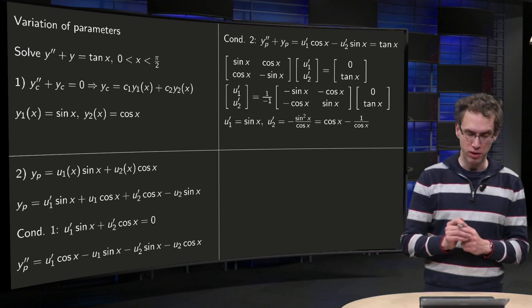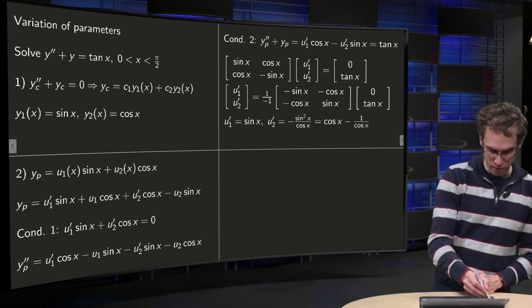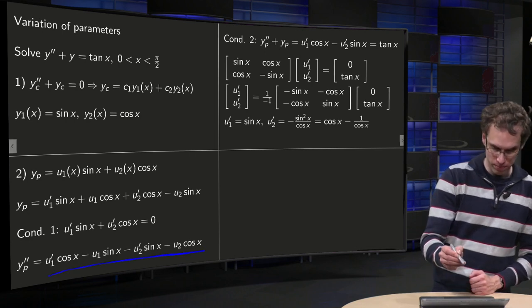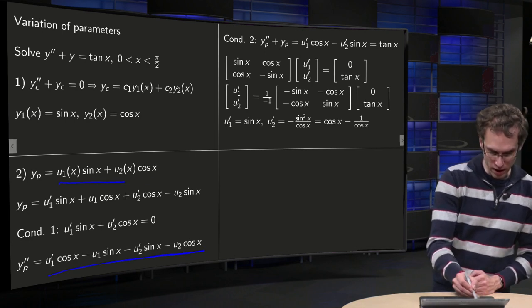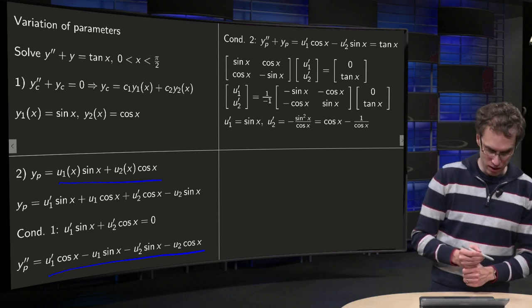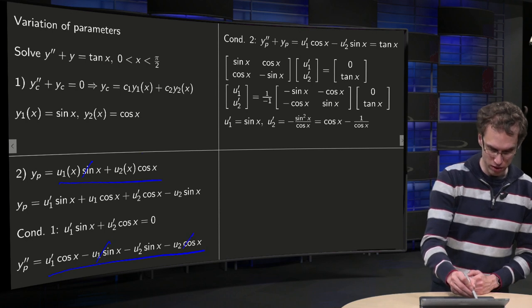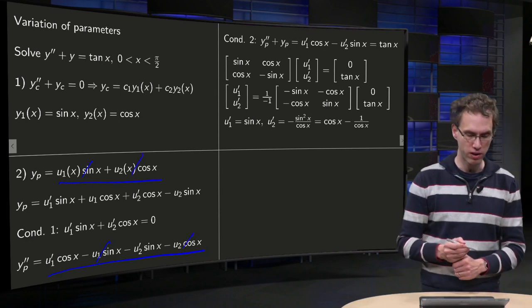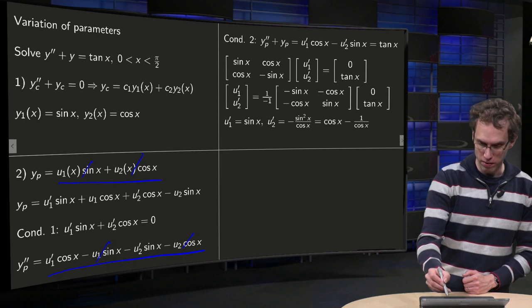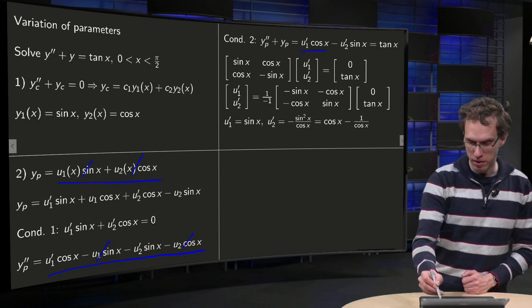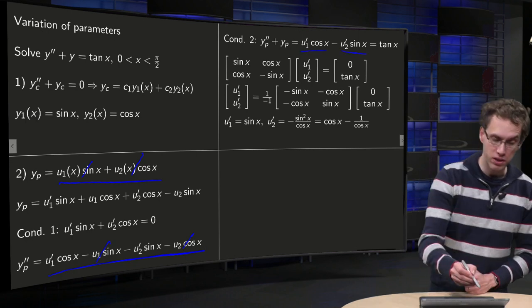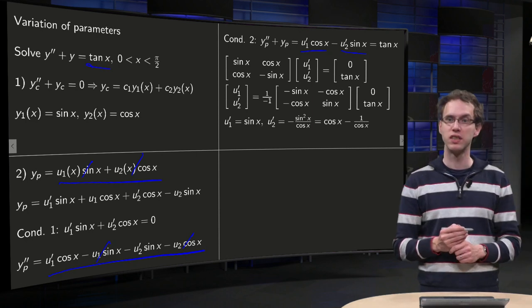So now we have our yₚ'' substitute in the differential equation, so we have y'' + y. We see that sometimes terms drop out, this term cancels out with this one and that one cancels out with that one. So we have only left u₁'cos(x) - u₂'sin(x) equals right hand side equals tan(x).